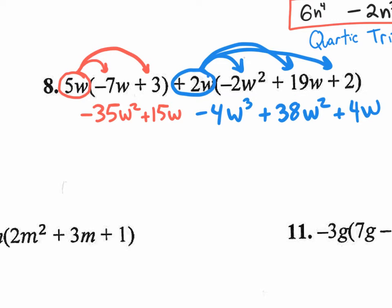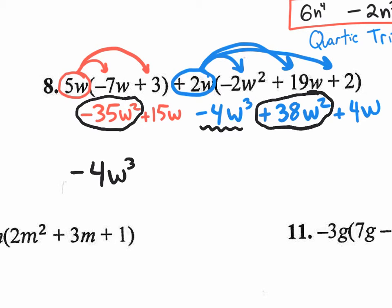Now you need to combine the terms that are alike. And since you want your answer in standard form, let's start with the highest exponent term, which will be the negative 4w to the third. And there is no other w to the third. So that's the first part of your answer. The next part would be the w squares. So if I take this negative 35w squared and combine it with the positive 38w squared, that's like saying you owe somebody $35 and you have 38. How do you end up? Positive 3 left over of those exact w squares.